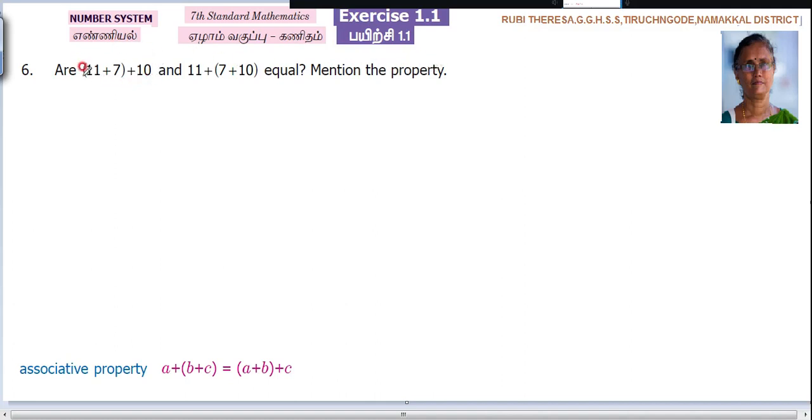First you do this. Let us take this. What is given? 11 plus 7 plus 10. First what you should do? 11 plus 7. You have to add the numbers what is given inside the bracket. So 11 plus 7, what is it? 18. 1 plus 7 is 8, then 1. So 18.